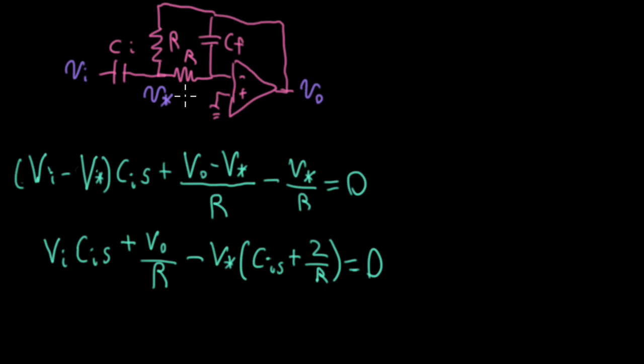So now I need to write a second Kirchhoff's current law equation. And I'll write the equation for the currents flowing into the node at the negative terminal here, which is at a virtual ground. So I'll have V star minus zero, which I won't bother to write, divided by R, plus VO, my output voltage divided by the impedance of the capacitor, which is one over CFS. So I'll just write CFS here. And we'll say that equals zero.